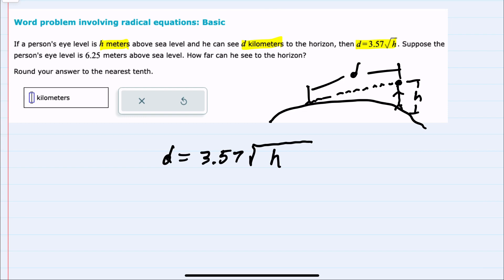And then our question is: suppose the person's eye level is 6.25 meters, how far can they see?